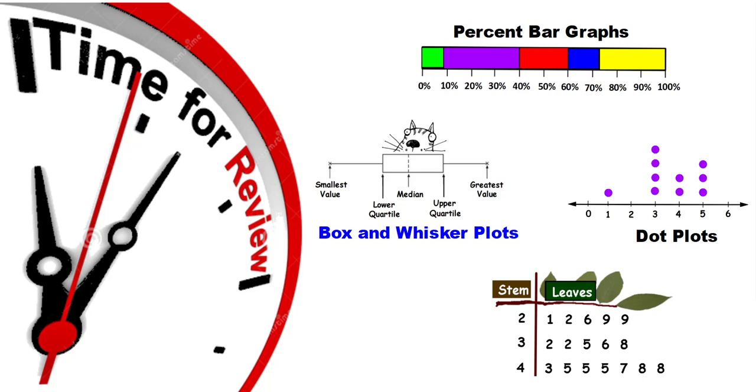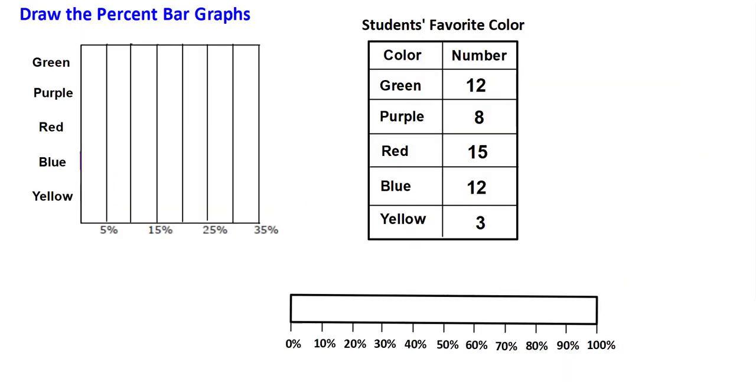Okay, these are the things that we're going to review right now: the percent bar graphs, box and whisker plots, dot plots, and stem and leaf plots. I want you to draw the percent bar graphs. You should be able to do this by now. Pause your video and get this work done yourself before you look at the answers.